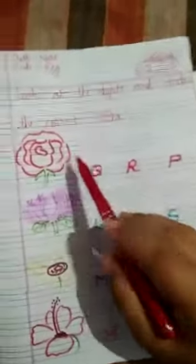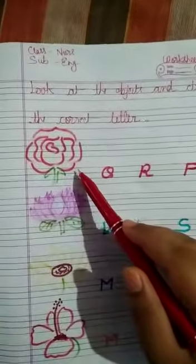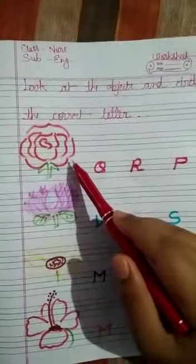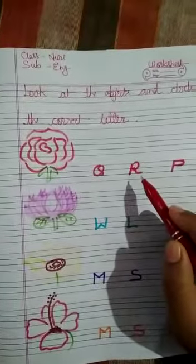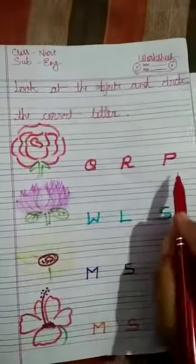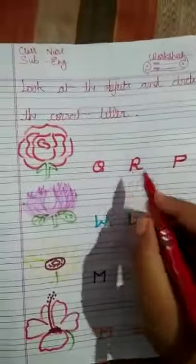Yeh picture jo hai, kis cheeze ki picture hai? Yeh rose ki picture hai, right? So R for rose hote hai. In three letters mein se R kaun hai? Yeh hai, right — so R ko circle karna hai. R for rose.